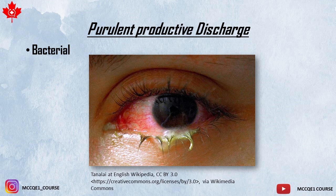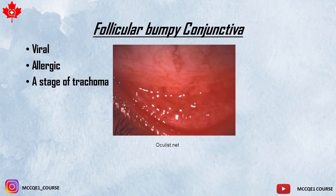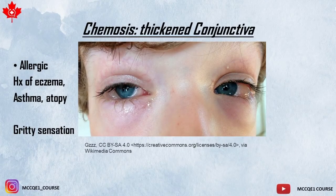On examination, if you see diffuse redness and the surface of the conjunctiva is bumpy or follicular, think of viral. If the surface is non-follicular, think of bacterial. A follicular, uneven surface of the conjunctiva favors viral or allergic conjunctivitis. If you see diffuse edema — thickening of the eyelid and surrounding tissues, and thickening of the conjunctiva called chemosis — that is in favor of allergic conjunctivitis.